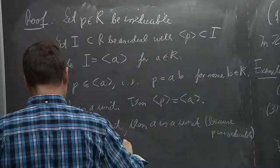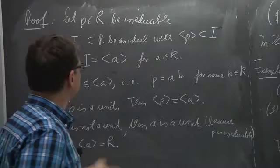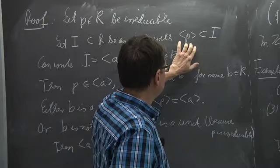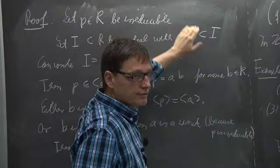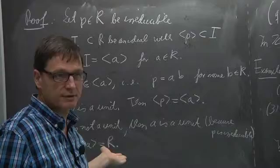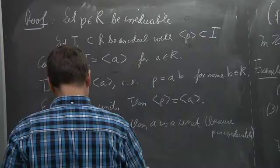So if our irreducible element is contained in an ideal, either that ideal equals (P) or it is the whole ring — that is precisely the definition of a maximal ideal.